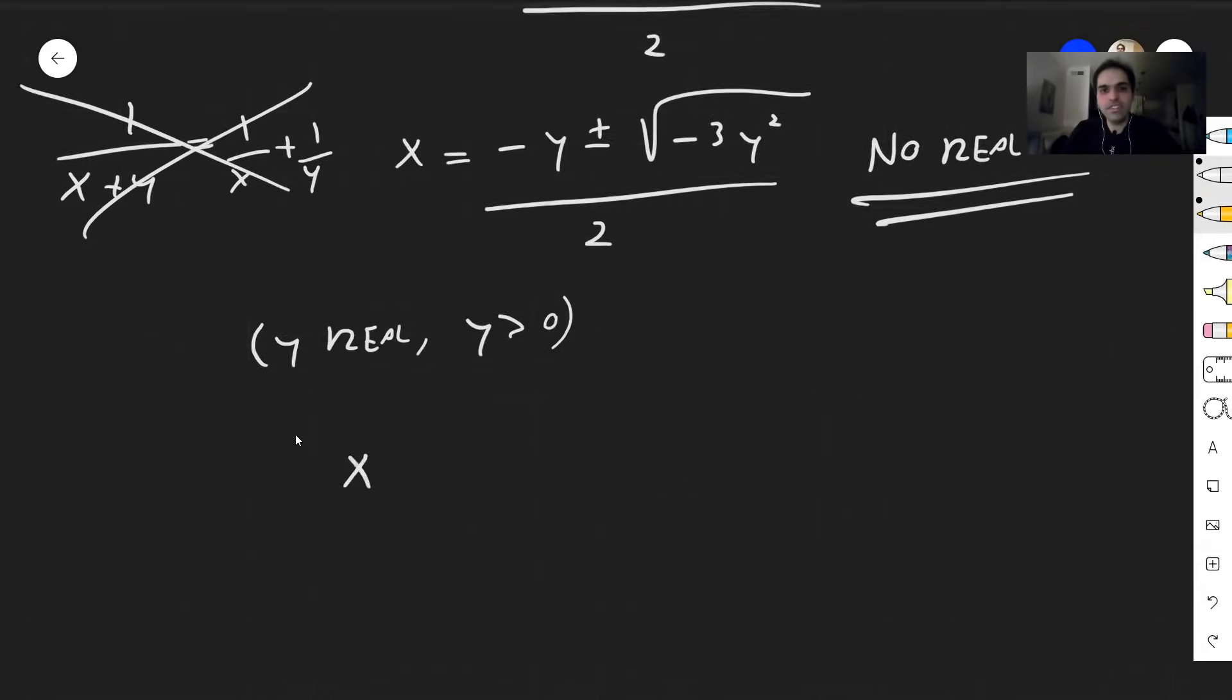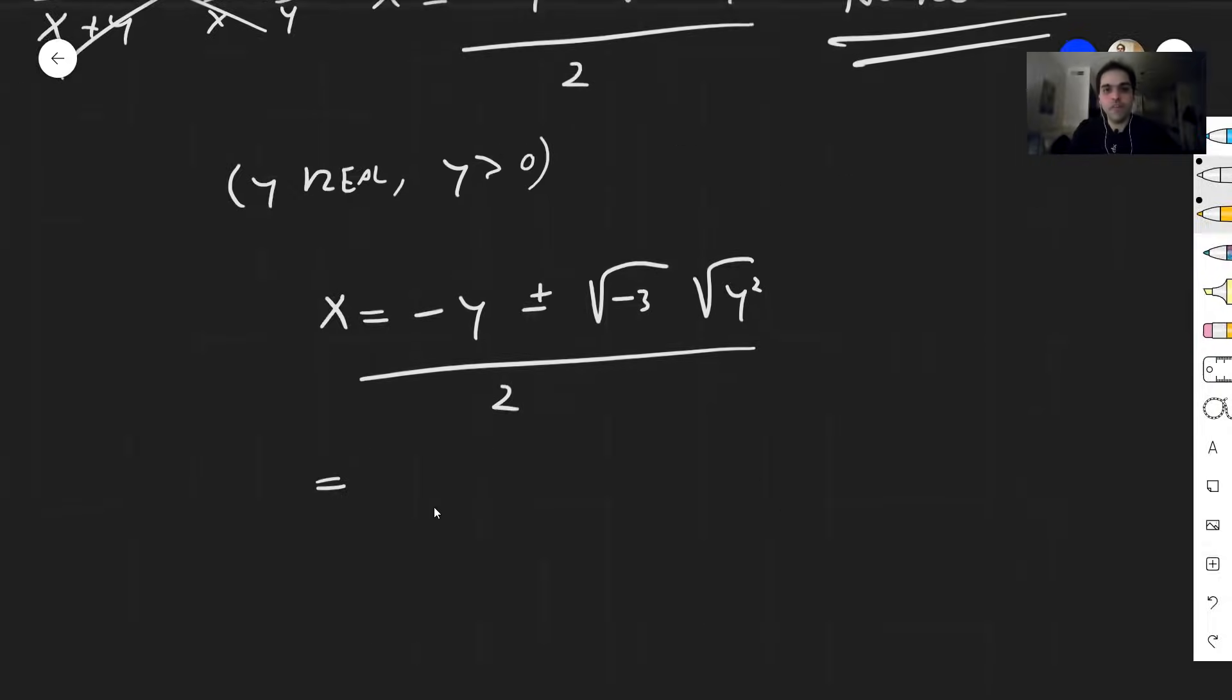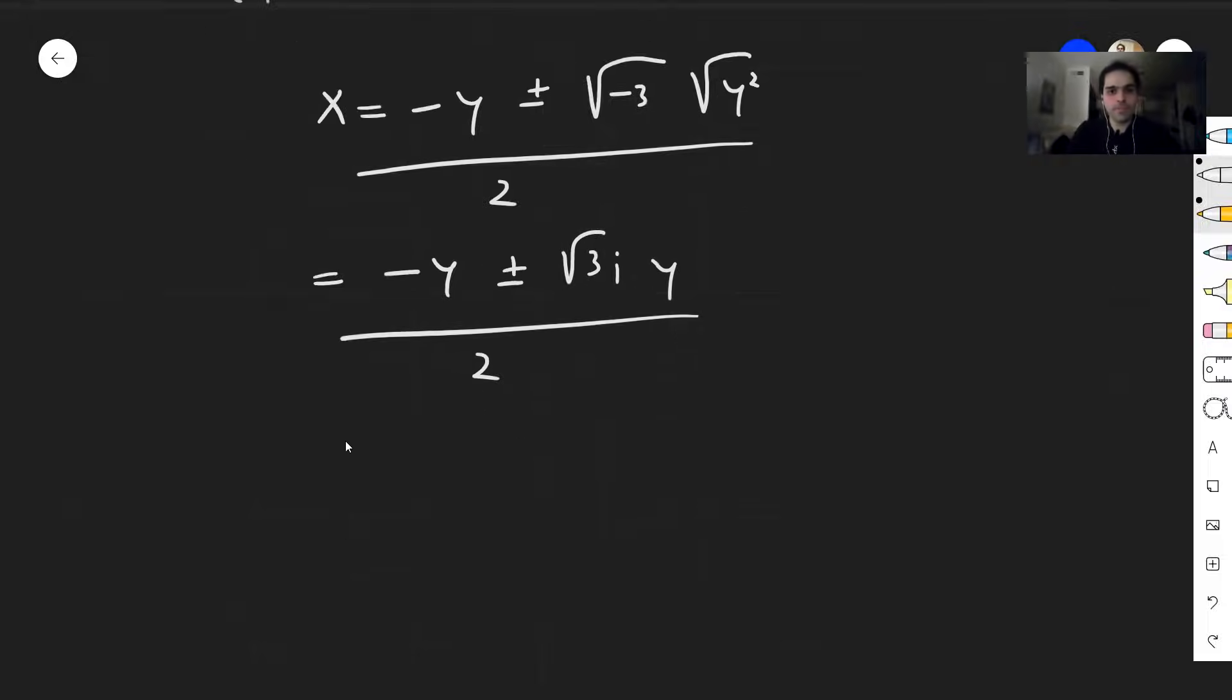Then what you get here, so x is minus y plus or minus square root of minus 3 square of y squared over 2, and this now simplifies to minus y plus or minus square root of 3i times y over 2. In other words, y times minus 1 half plus or minus square root of 3i over 2.